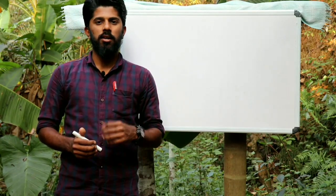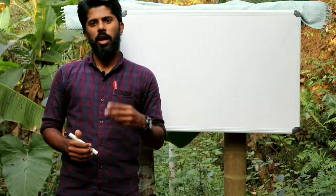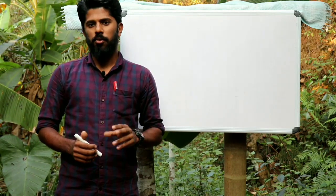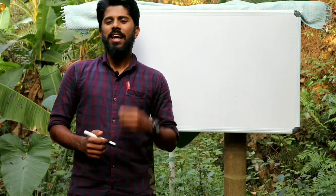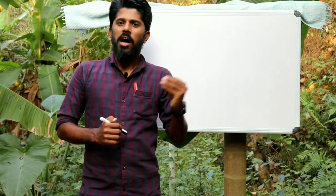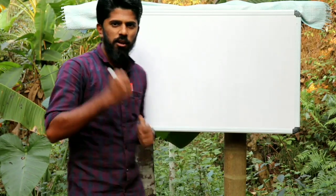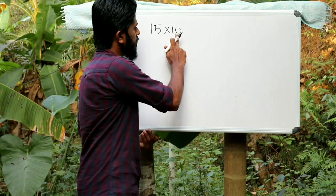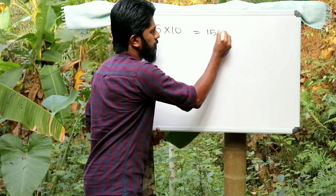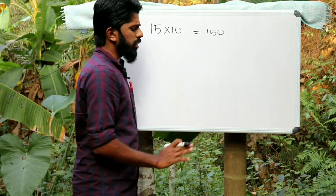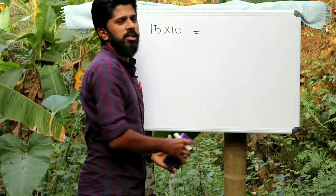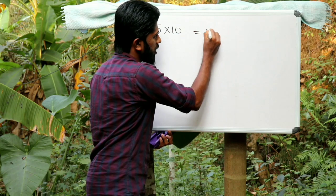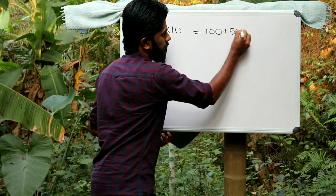We are going to discuss how to use the Indusian technique. For example, one hundred and a half plus three and fifty — therefore the answer is 150.